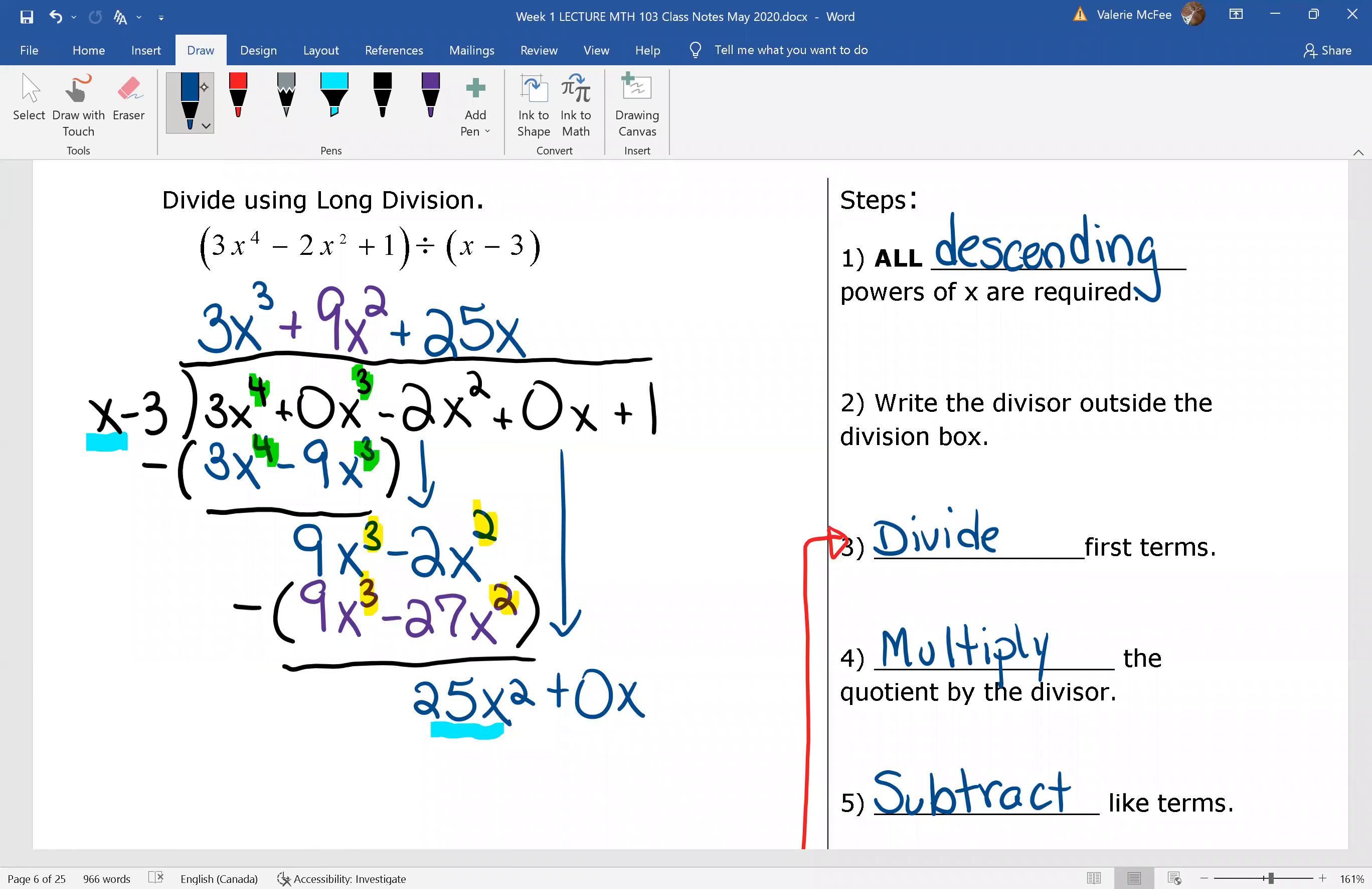Divide the first terms, 25x squared divided by x and write the quotient on top. Now we need to multiply.